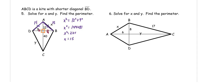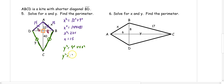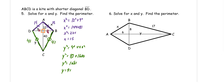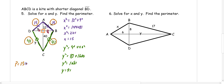Now solving for Y, which gives us CD and BC — the other two sets of congruent sides. Y² = 9² + 40² = 81 + 1,600 = 1,681. Taking the square root, Y = 41. The last step is finding the perimeter: add all the outside sides together — 15 + 15 + 41 + 41 — and we get a perimeter of 112.